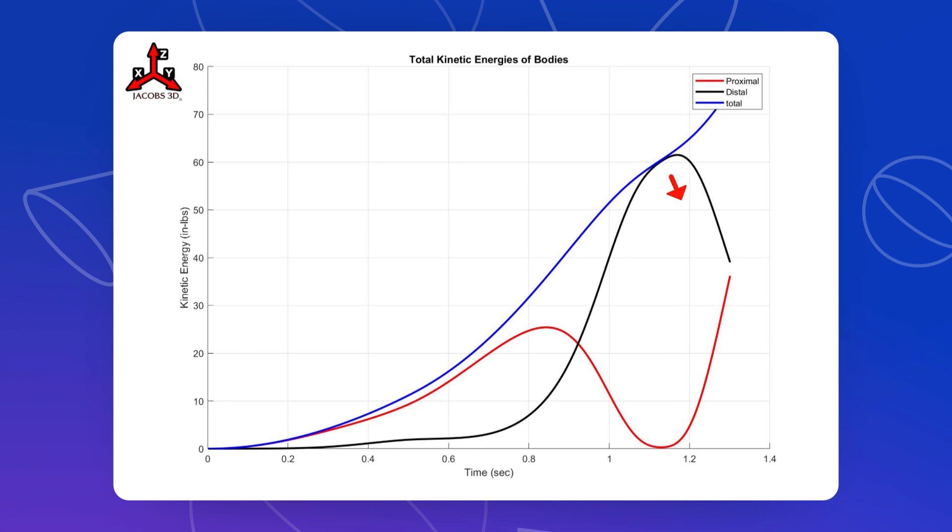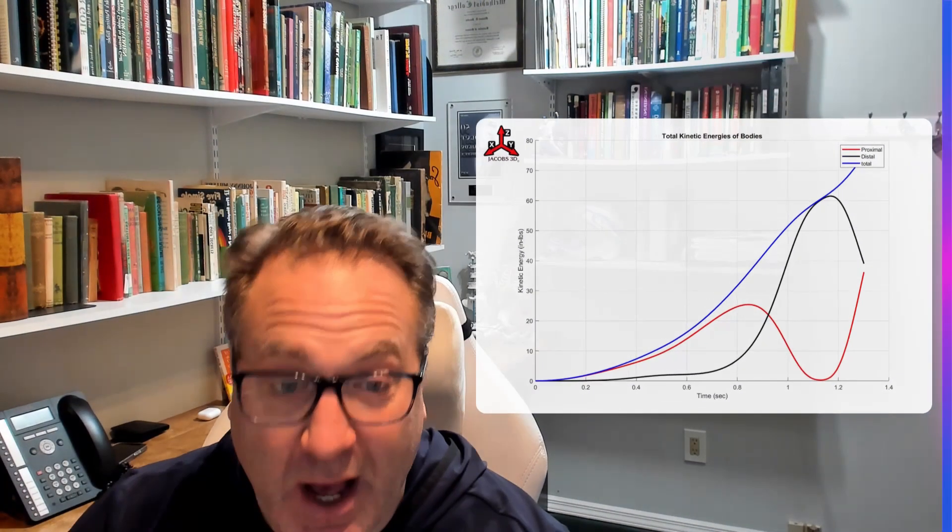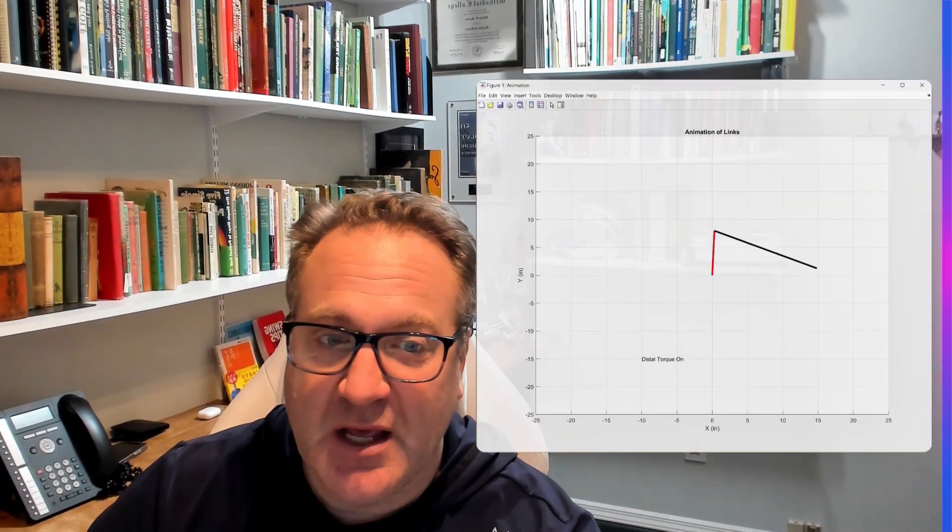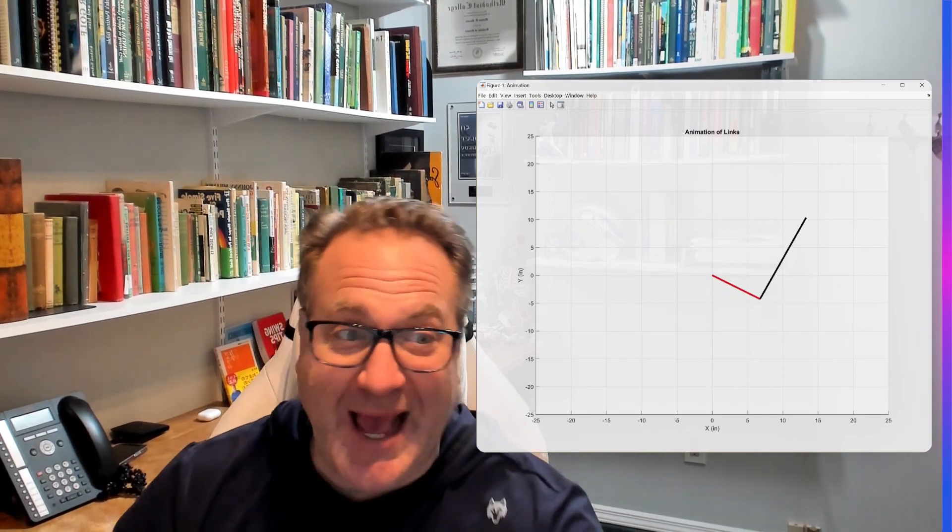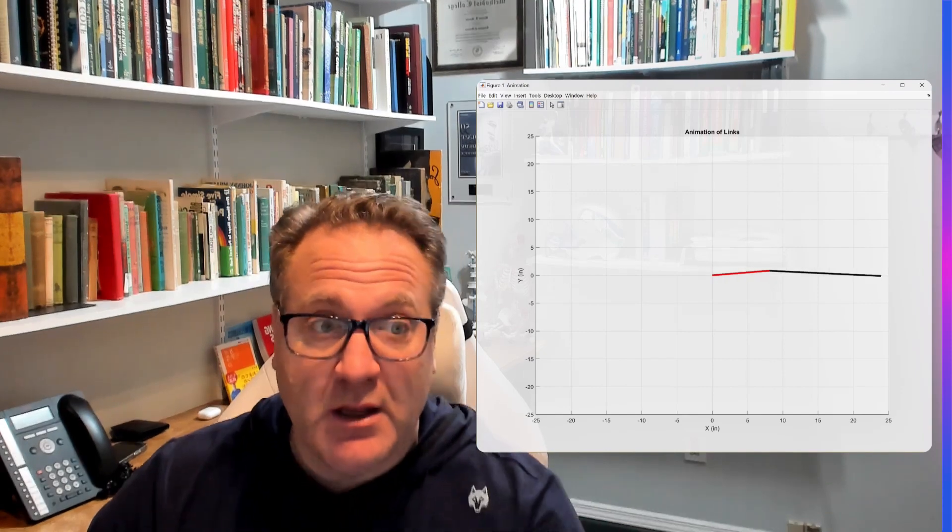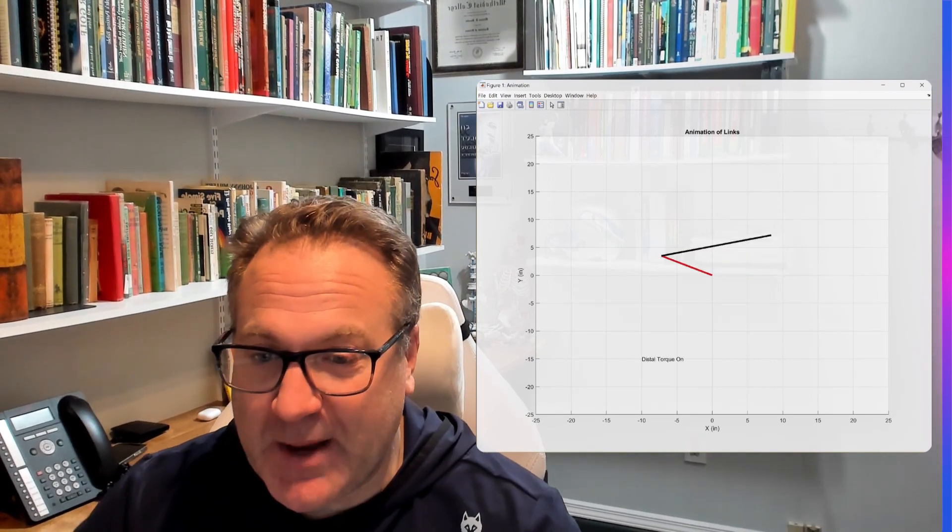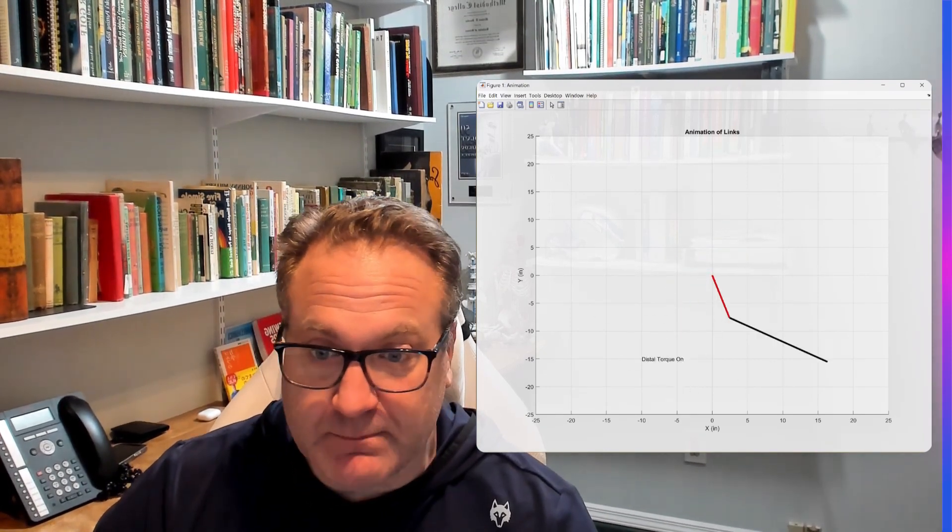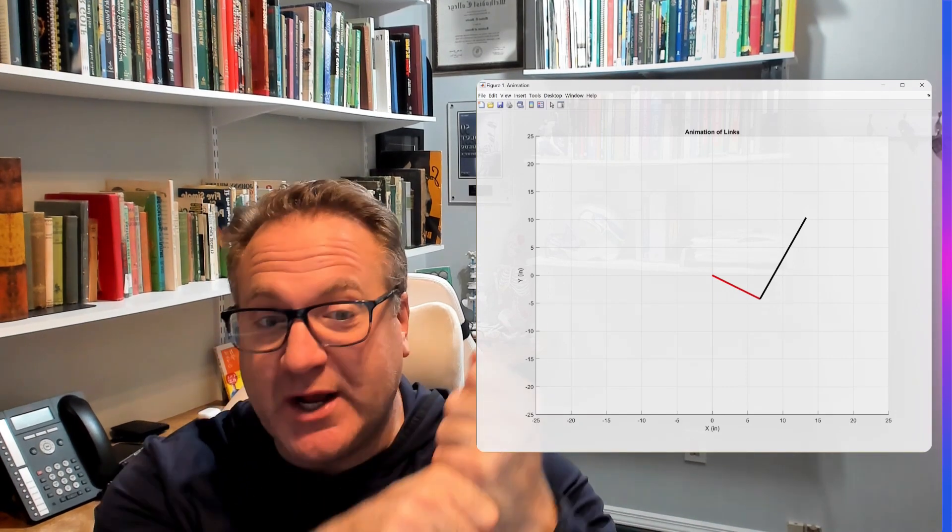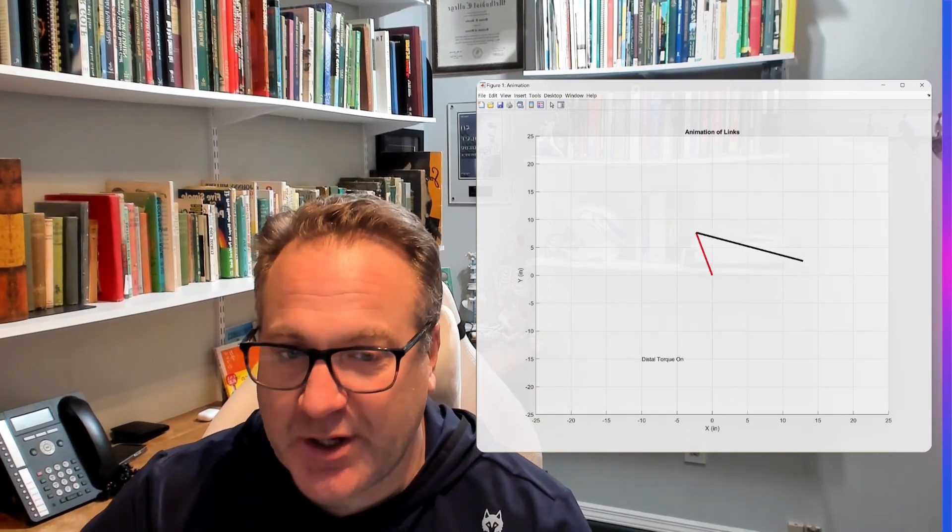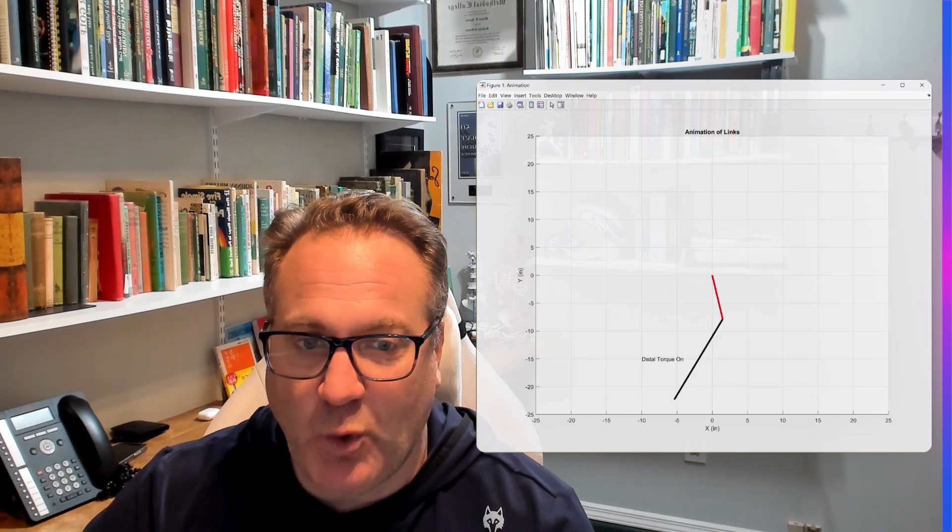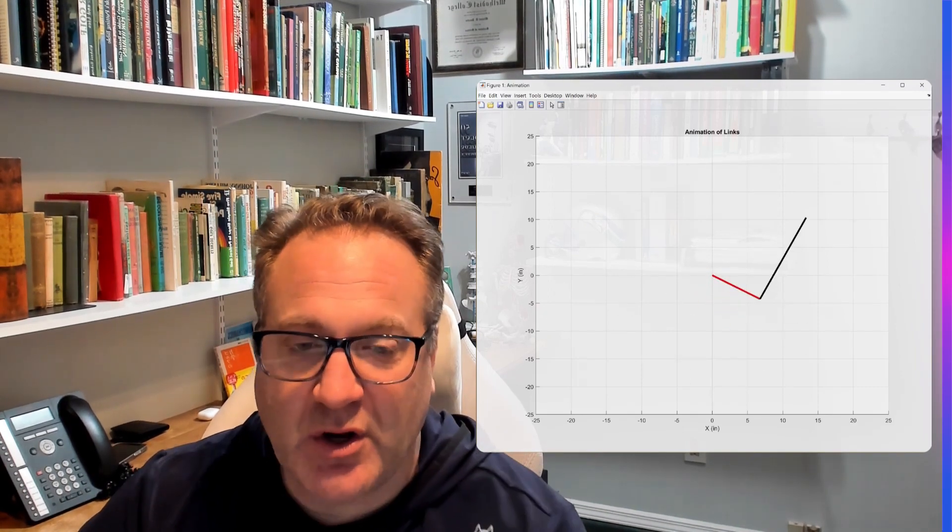And that was transferred to it from the distal link. So it gives you an idea how complex this interaction is. But it also shows you that the speeding up and slowing down angularly in a swing is more than just about ways that we try to torque it. Because in this simulation, we have a constant torque at the proximal link. And then once the distal link turns its torque on, that torque is constant the rest of the way.